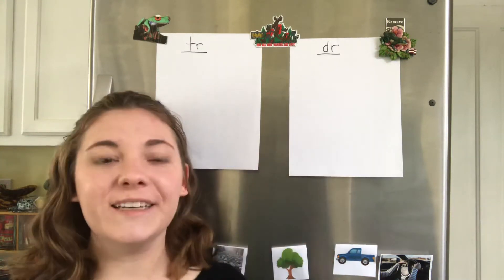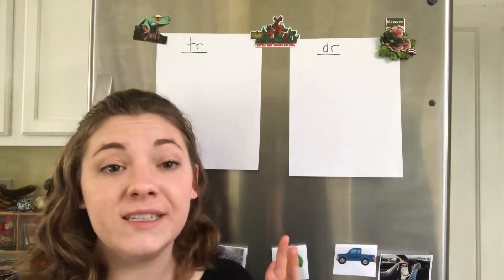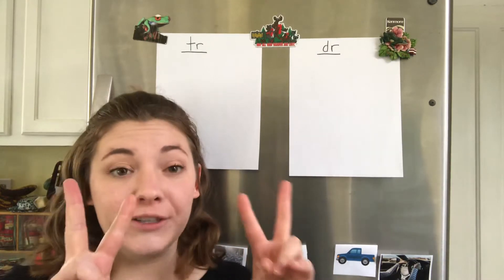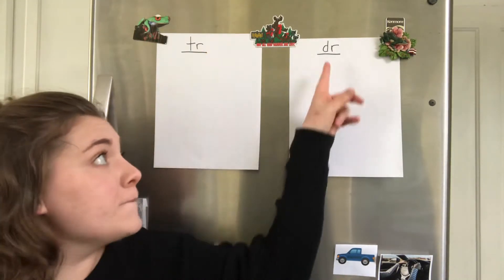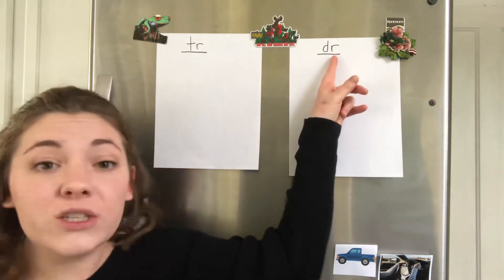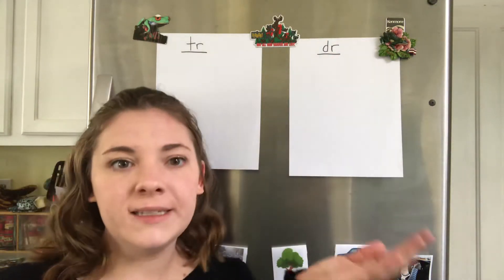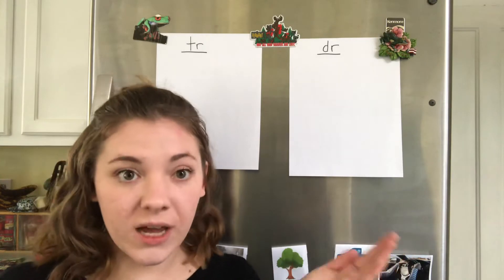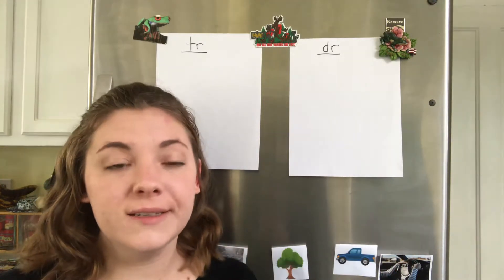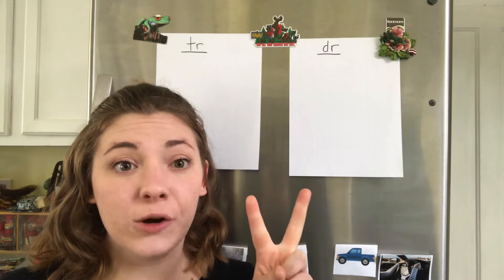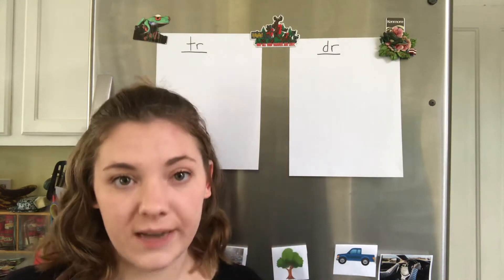Hi everyone! Today we're gonna be talking about two different letter sounds together. We have T and R, and then we also have D and R. We know that T makes the T sound and R makes the R sound. So when we put T and R together, it makes the TR sound.